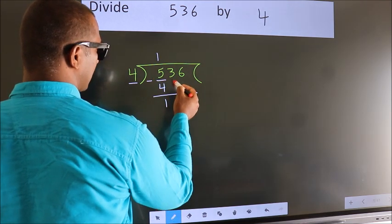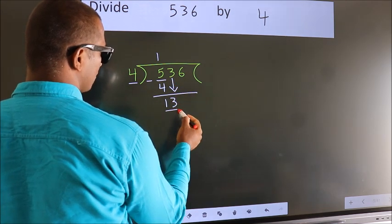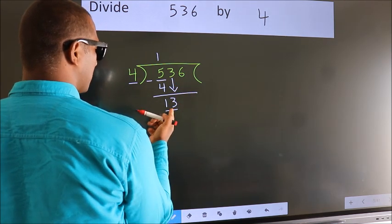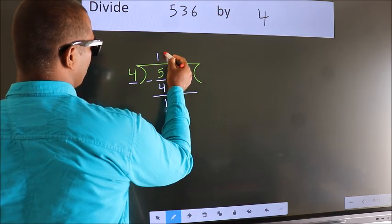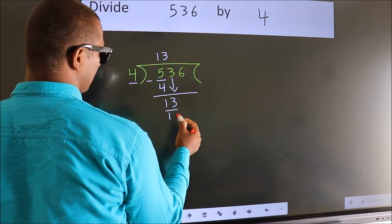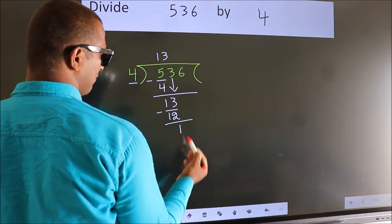After this, bring down the beside number. So, 3 down. So, 13. A number close to 13 in 4 table is 4 threes, 12. Now, we subtract. We get 1.